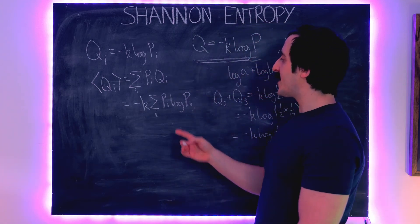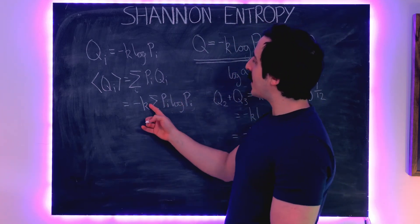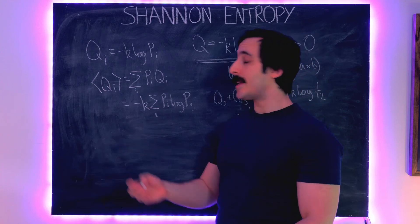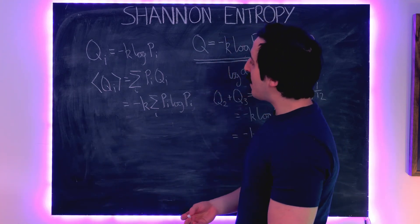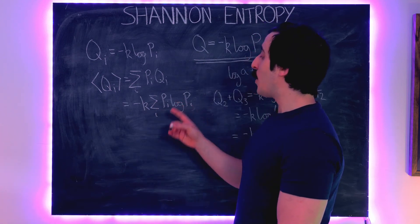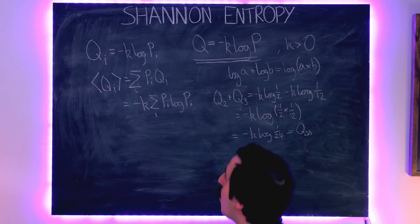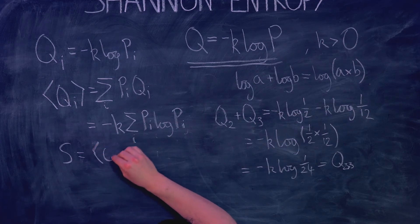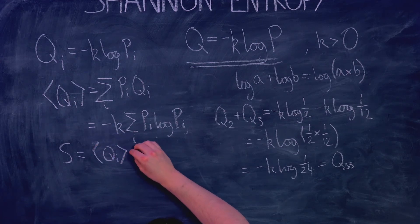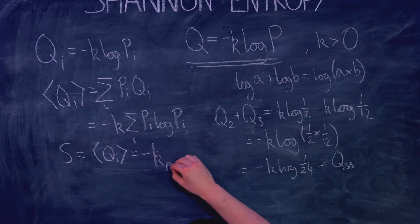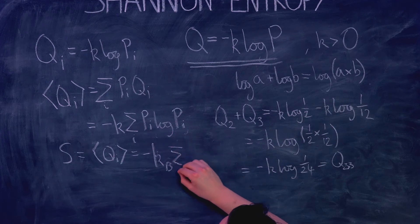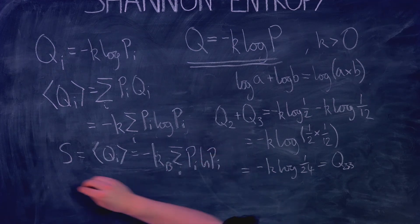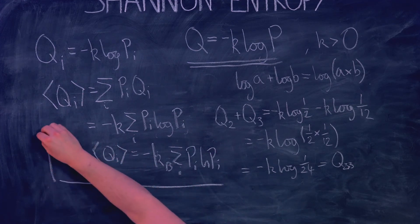If we set K equal to Boltzmann's constant k_B and use the natural logarithm, then the entropy S — equal to the expected value of Q_i — is given by S = minus k_B times the sum over i of P_i log P_i. This is the expression for the Shannon entropy.